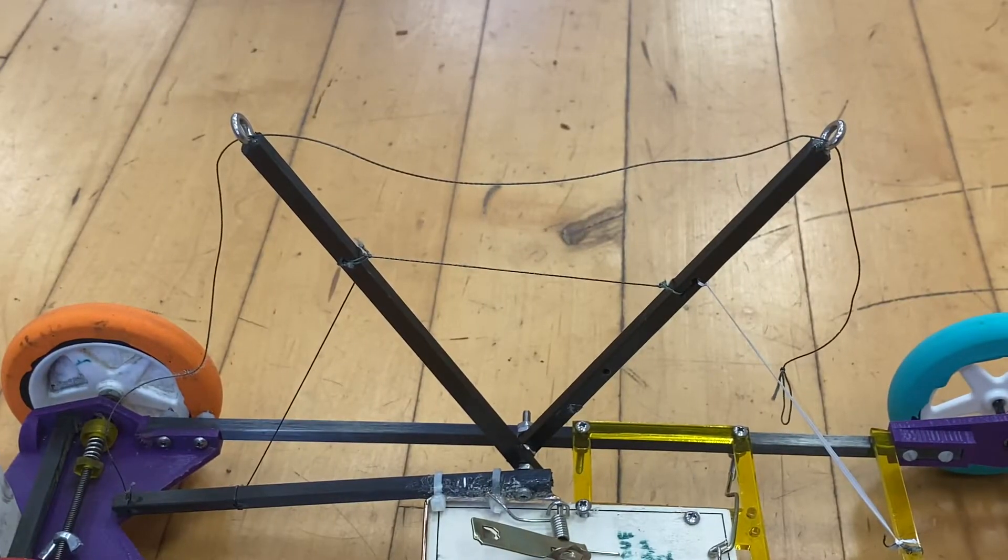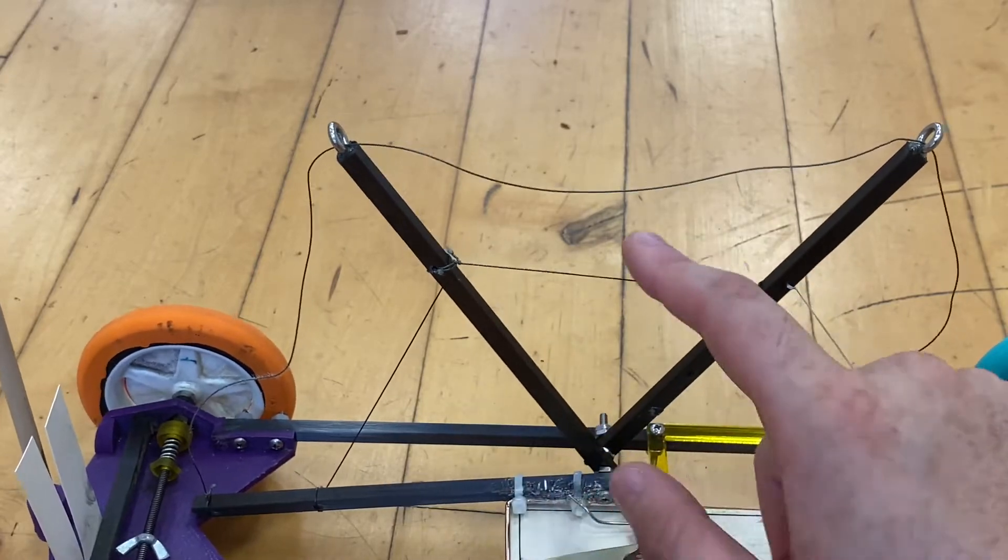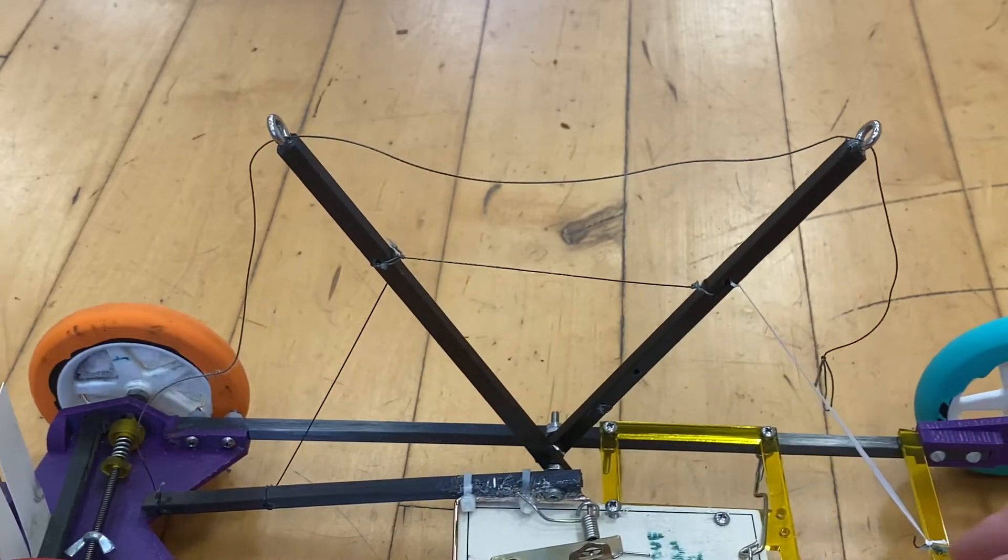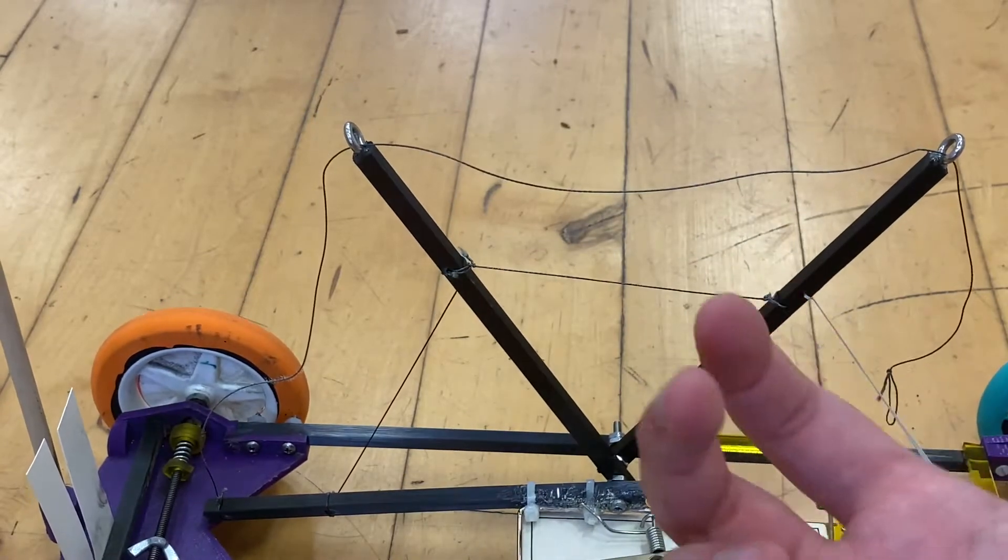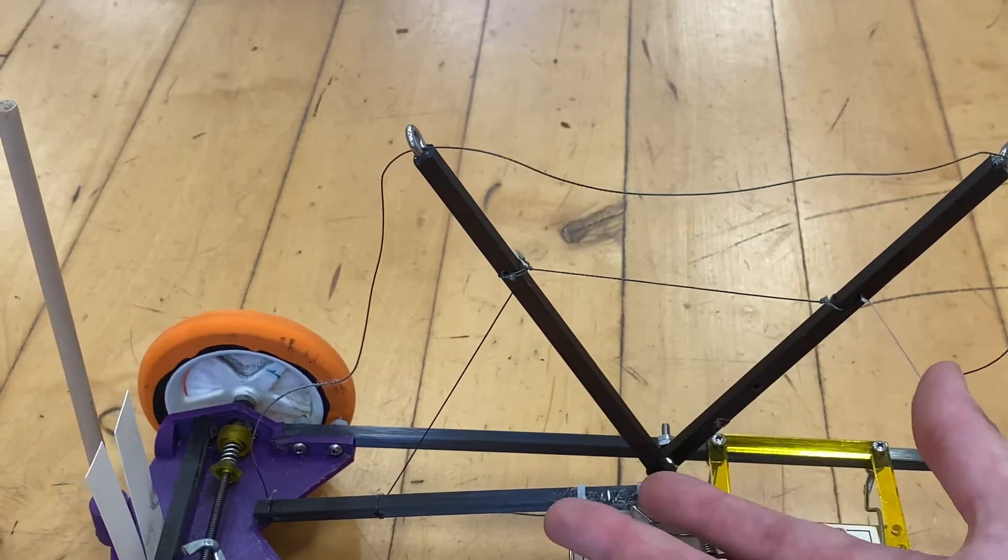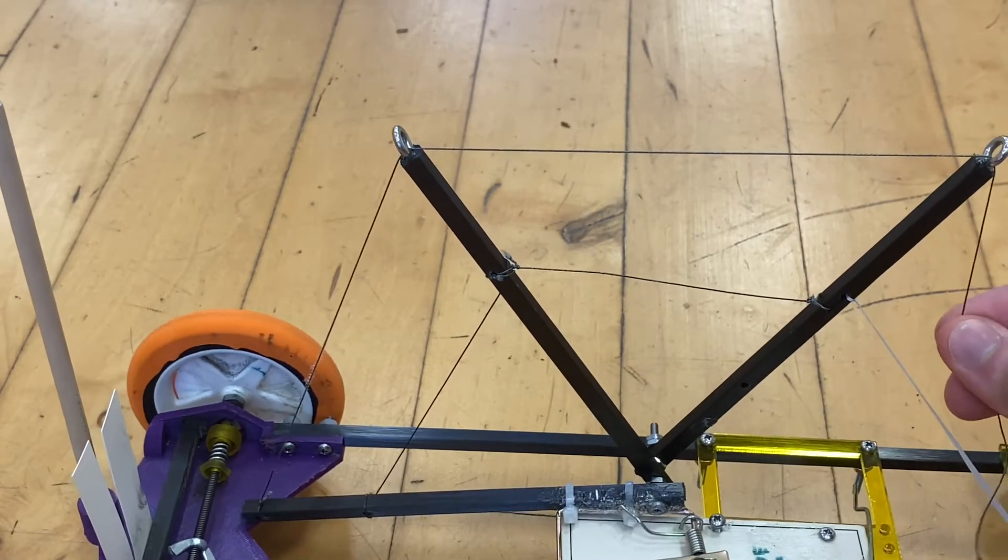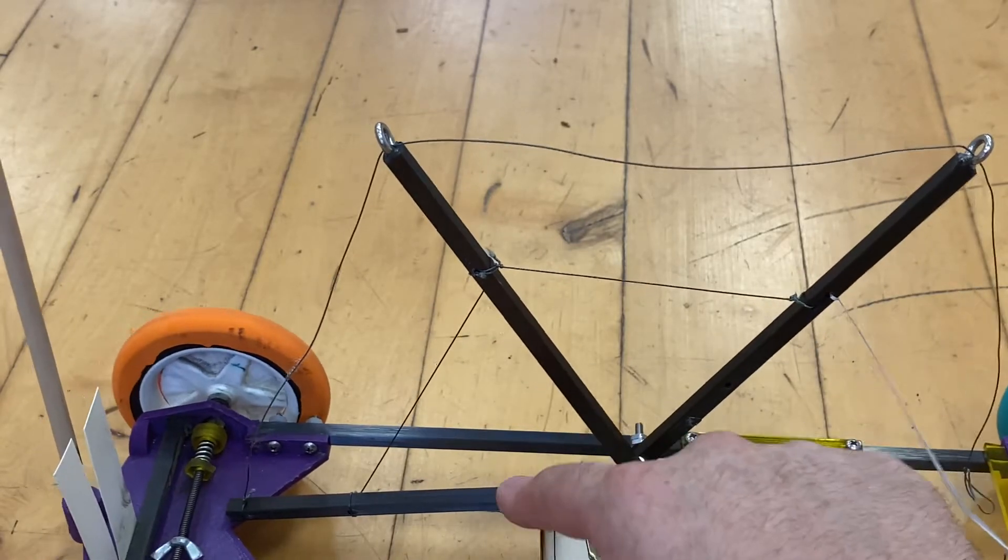All right, so right now what you're looking at is the mousetrap vehicle that is using a compound lever, which are these three black things right here. So basically what a compound lever is - it's compound, very self-explanatory. It has multiple levers, and it just changes the amount of string you're able to pull without changing the length of your lever arm.